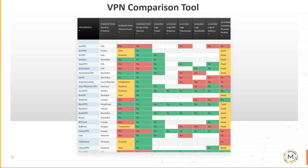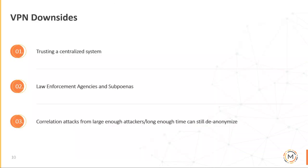The downsides of using VPNs: in the end, you're trusting a centralized system. Law enforcement agencies — with jurisdiction and subpoenas — if they are given a subpoena, they must observe whatever the law enforcement agency says in their country of origin. Also, with a large enough attacker, correlation attacks can still be carried out. We are imagining a global passive adversary, so they are large enough, and with enough time, you can still de-anonymize this traffic.